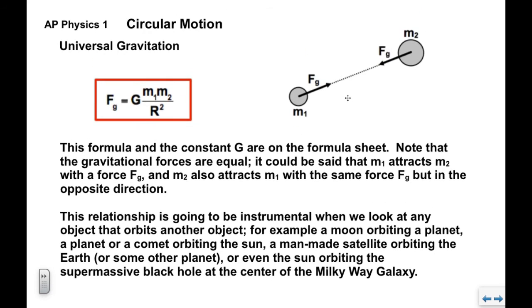Now this relationship is going to be instrumental when we look at any object that orbits any other object. We might think of a moon orbiting the Earth or orbiting a planet, anything that orbits the sun, man-made satellites orbiting the Earth or any other planet. The sun, the whole solar system orbits around the supermassive black hole that's at the center of the Milky Way. Anything that orbits anything else, we're going to need this relationship here.